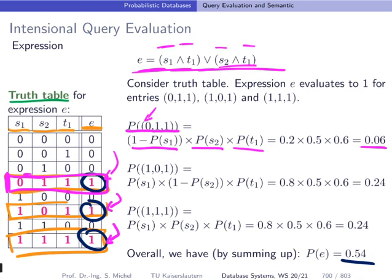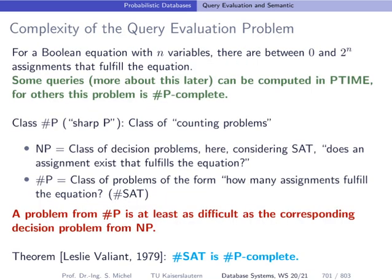And in fact, it's not really different what we did here, because the truth table is exactly this possible world enumeration. And when we are looking here for the ones in the E column, this is exactly looking for those possible worlds where our result tuple is included. So we get, naturally, the same we got in the other way to compute this.